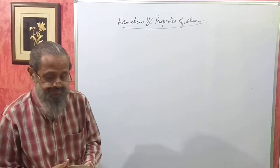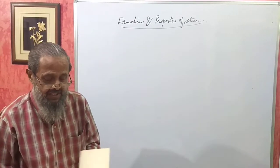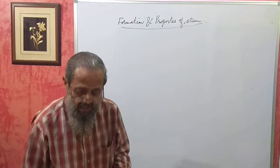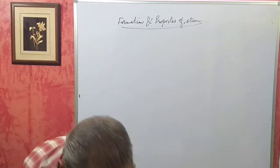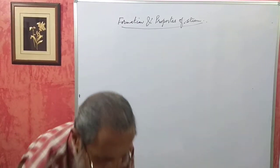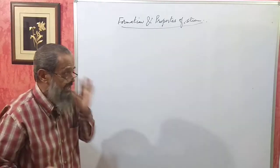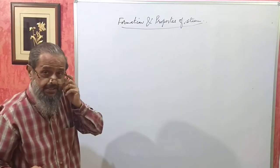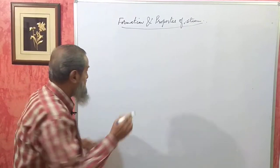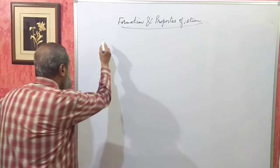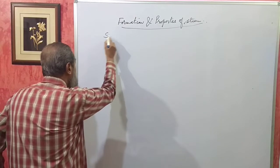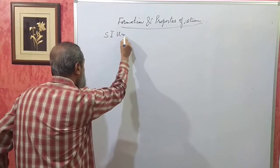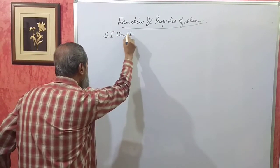Now, regarding steam tables — they will be of two types. One is SI unit and the other one is MKS unit. What we have to use is the SI unit.